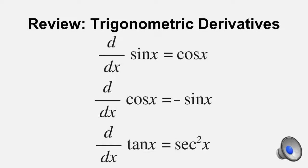The derivative of sine x is equal to cosine x. The derivative of cosine x is equal to negative sine x. Likewise, tangent x will become secant squared x. We will be reviewing the inverse trig functions and their definitions.